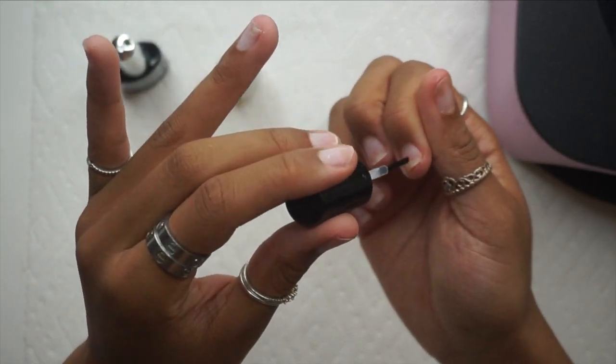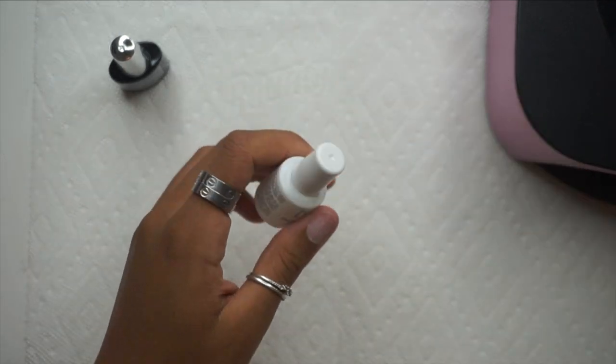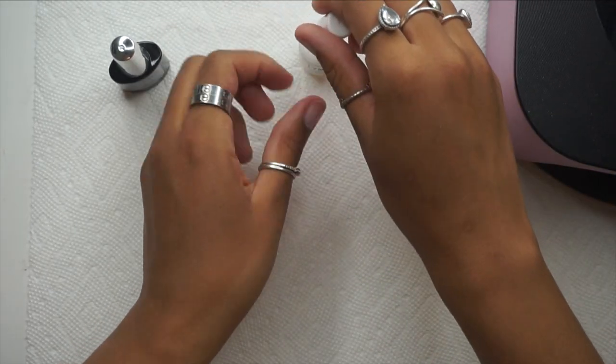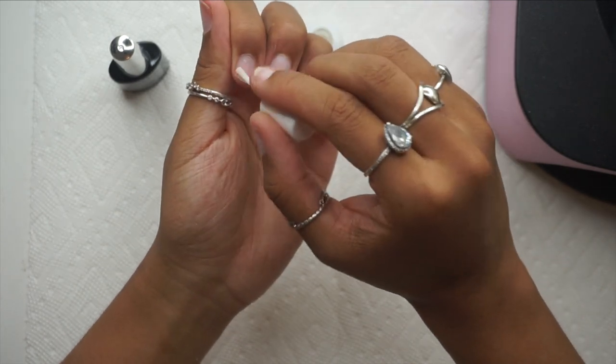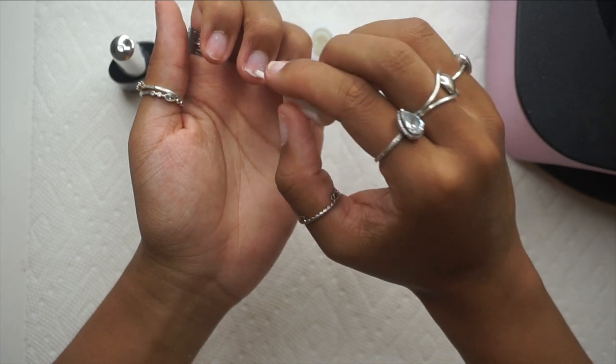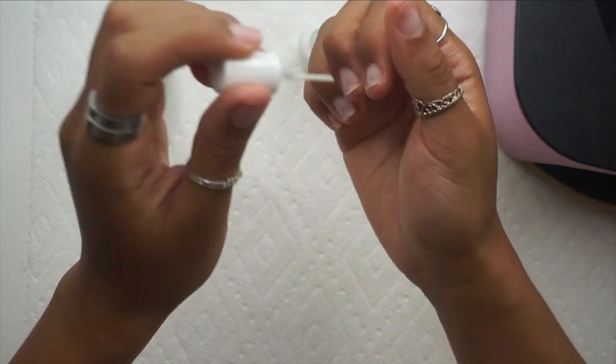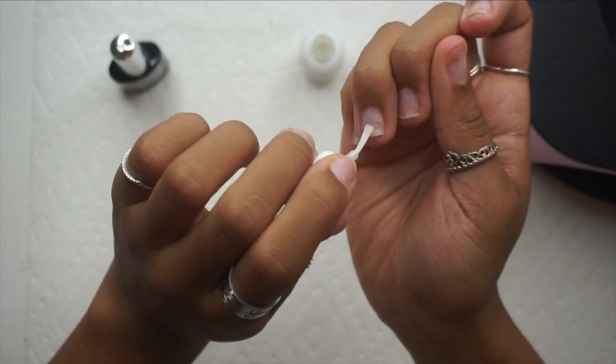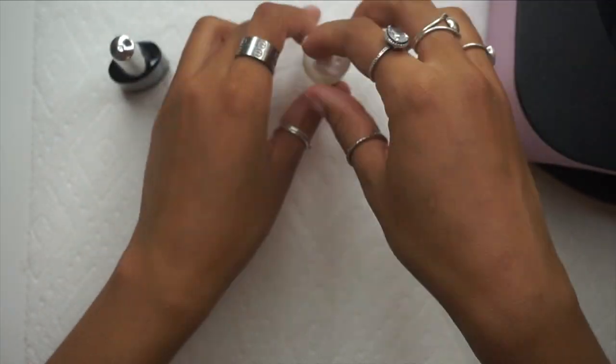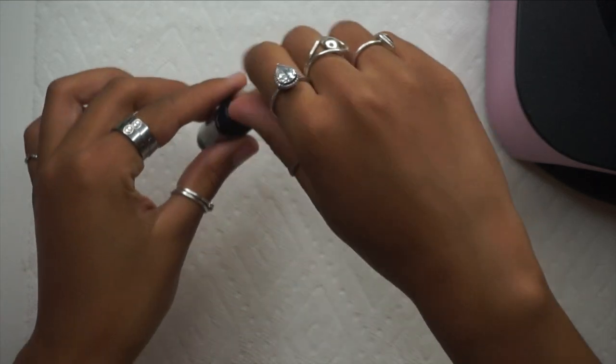After I finish applying that, I'm gonna go in with this Young Nails Bond Protein. I love this stuff and this honestly changed the game for me. Some people love it, some people hate it. The thing about nail prep, primer, and dehydrator is everything doesn't work for everybody. Everybody is different, every nail bed is different. This really works for me—if I put this on, my nails are not going nowhere for a very long time.